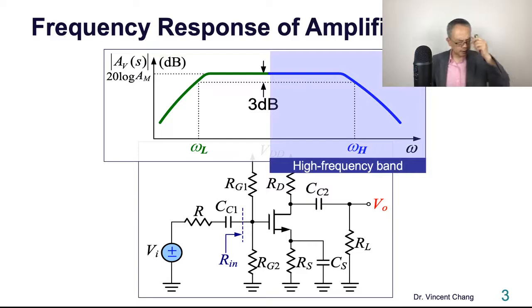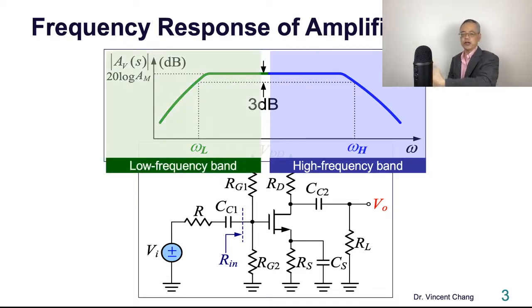And why? Because the high frequency attenuation, the behavior, is dominated, is affected by those internal capacitors, the semiconductor's parasitic capacitors. And the low frequency behavior is affected by those external ones, like the coupling CC1, CC2, and the CS. So internal affects the high frequency and external lets the gain fall at low frequency.